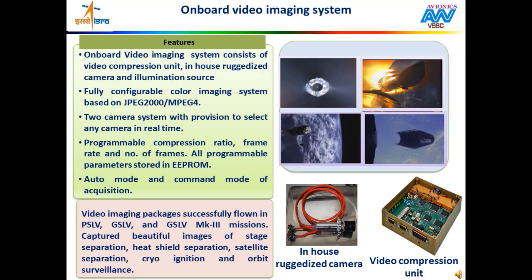Another important electronic system in present day launch vehicles is the onboard video imaging system. The aim of the video imaging system is to capture and observe important events at different stages of the rocket launch in real time. Satellite separation, stage separation and engine ignition events are observed and analyzed in real time during the launch. The images obtained in real time by video imaging systems on board are then used to confirm the occurrence of events and ensure nominal performance of the launch.